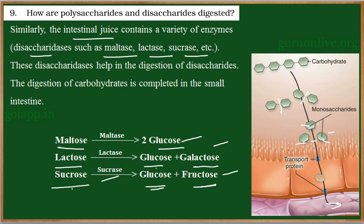This is how polysaccharides are converted to monosaccharides. Carbohydrate digestion begins in the mouth and completes in the intestine. In the mouth, salivary amylase breaks down the carbohydrates. In the intestine, pancreatic amylase digests carbohydrates into disaccharides, and these disaccharides are further broken down by maltase, lactase, and sucrase to get the monomers — glucose, galactose, and fructose.